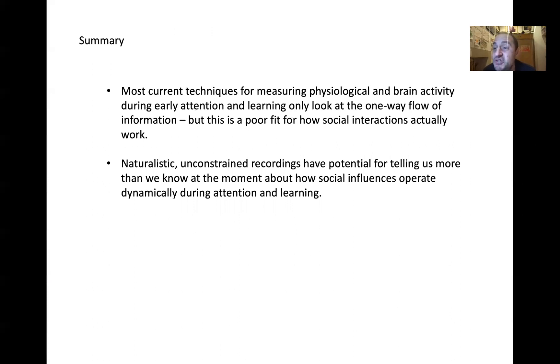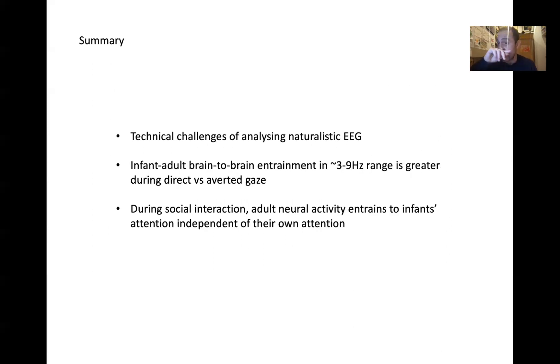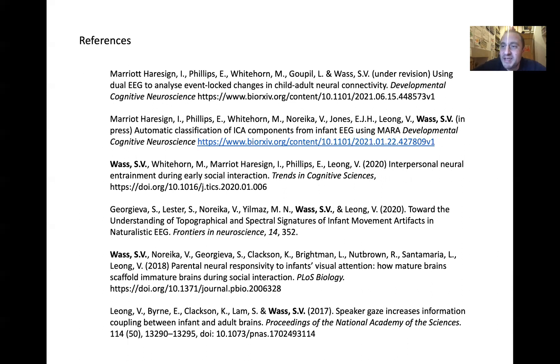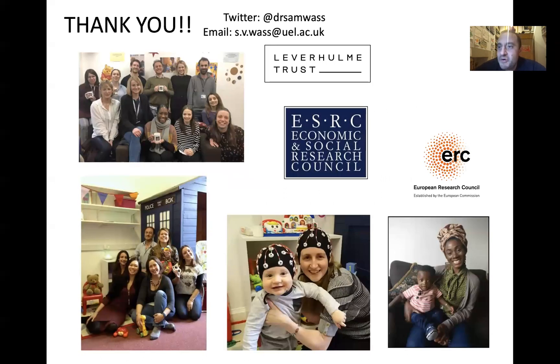So just to say what I've said: most current techniques for measuring physiological and brain activity during early attention only look at a one-way flow of information. But this is a poor fit for how social interactions work. We know there are bidirectional mechanisms going on, so we need to work out what these mechanisms are at the neural level. Naturalistic unconstrained recordings have potential for telling us more about how social influences operate dynamically during attention and learning. We also talked about the technical challenges of analyzing naturalistic EEG and the ways around that we're finding. We talked about one paper suggesting that infant to adult entrainment is higher during direct versus aversive gaze, and another paper suggesting that during social interaction, adult neural activity entrains to infant's attention independent of their own attention. These are the references and papers I've been talking about today. If you're interested, feel free to look them up or drop me a line. But for now, thank you very much to funders, to colleagues, and most importantly, to our research participants.